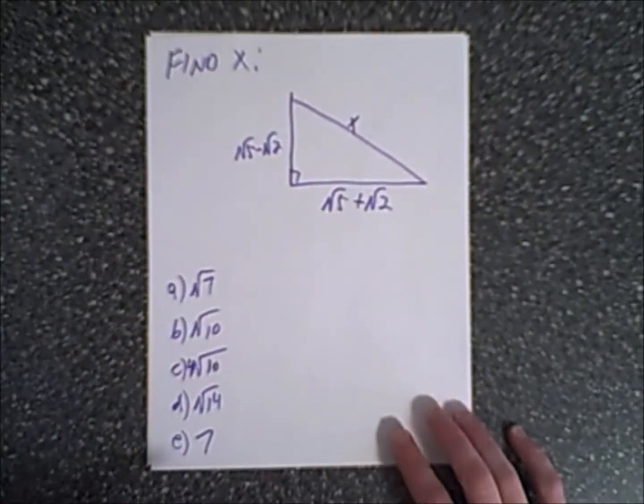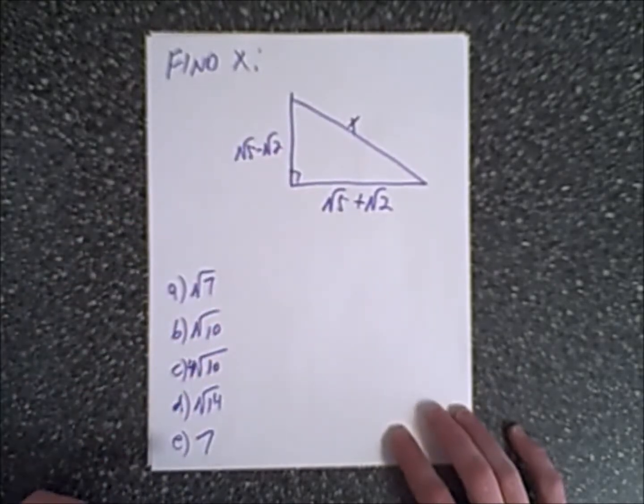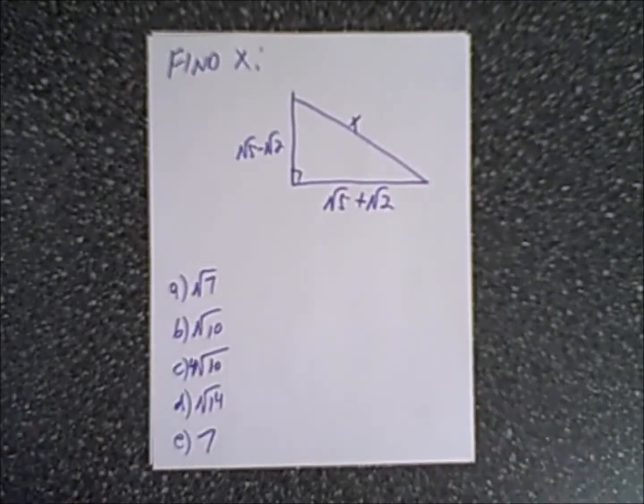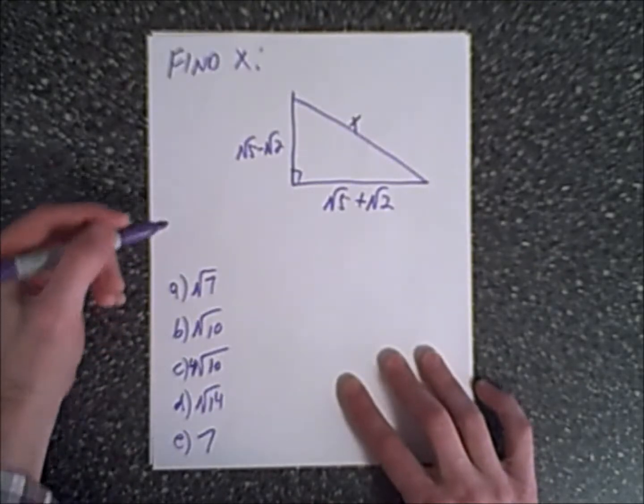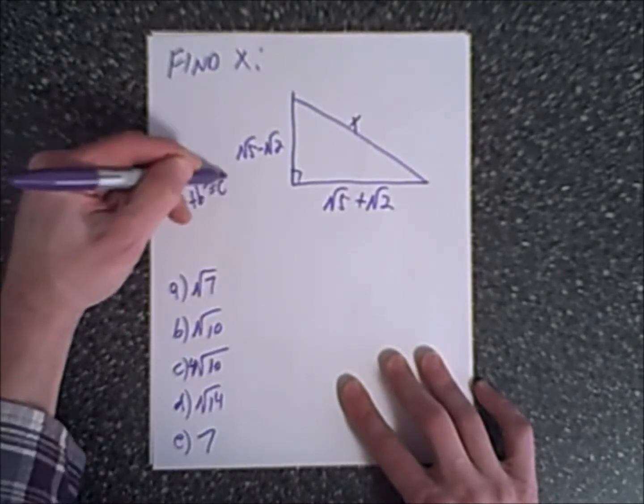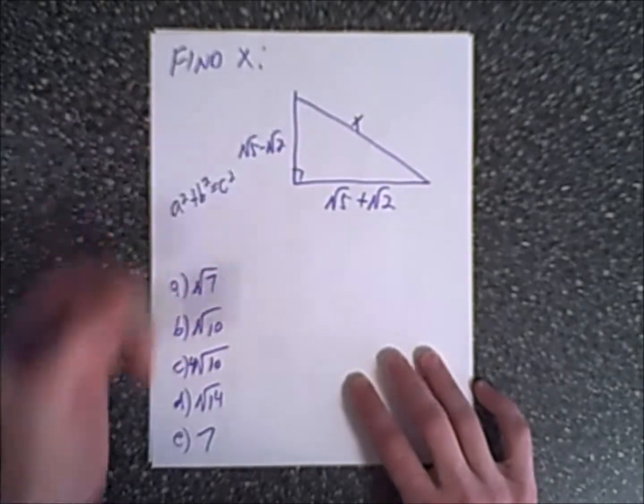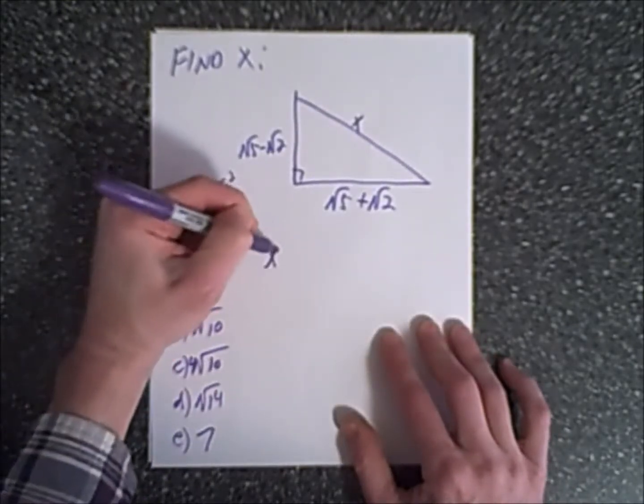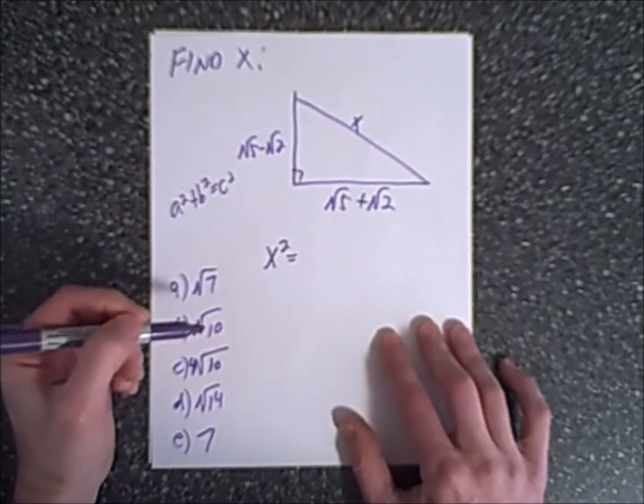We need to find x, and as you can see, it's a right triangle, so x is the hypotenuse. The first thing we'll need to know is we need to recognize the Pythagorean theorem, which is a squared plus b squared equals c squared, where a and b are the legs and c is the hypotenuse. Knowing that, we would have to see that x squared equals this side squared plus that side squared, and we're going to square root it.